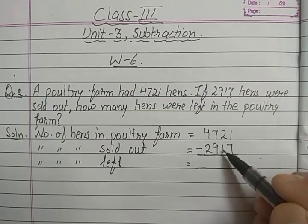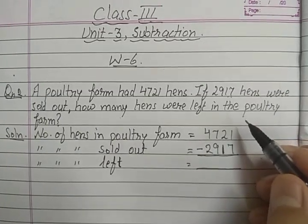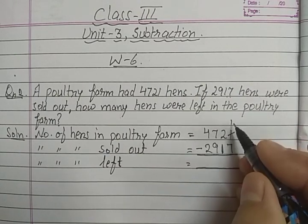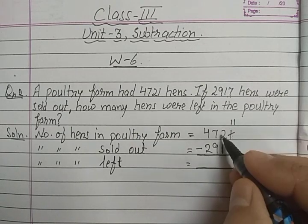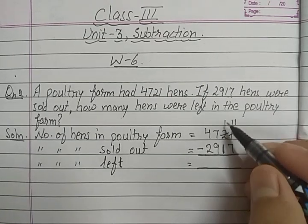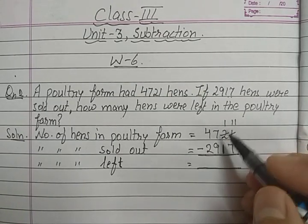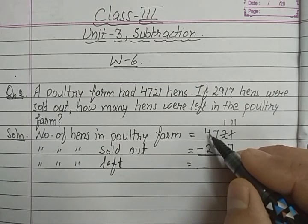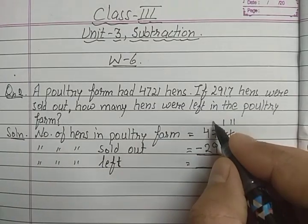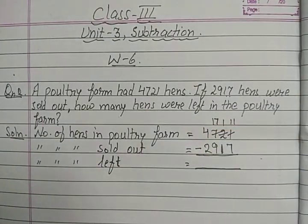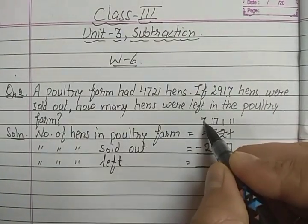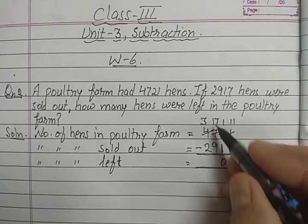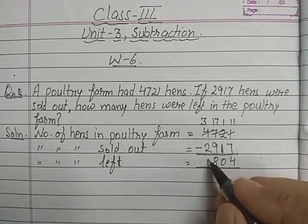Now subtract the four-digit numbers. First step: make the upper digit greater. Here 1 is smaller than 7, so we borrow from the tens place — it becomes 11. The tens place now has 1 left. Here 1 and 1 are equal, no borrowing needed. But 7 is smaller than 9 in the hundreds place, so we borrow 1000 from thousands — hundreds become 17, thousands become 3. Now: 11 minus 7 is 4, 1 minus 1 is 0, 17 minus 9 is 8, and 3 minus 2 is 1.